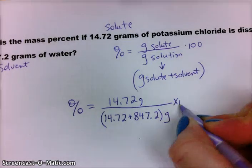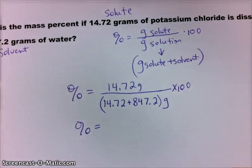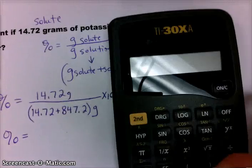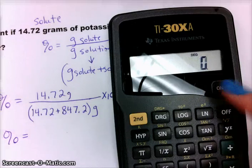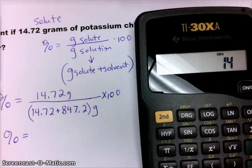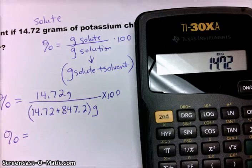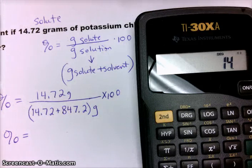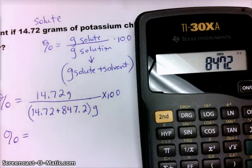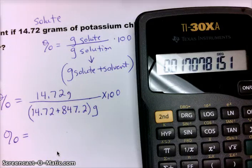So let's get our calculator and solve for this percentage. We have 14.72 divided by parentheses 14.72 plus 847.2, close my parentheses, and then times 100.